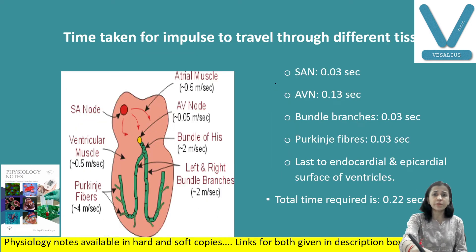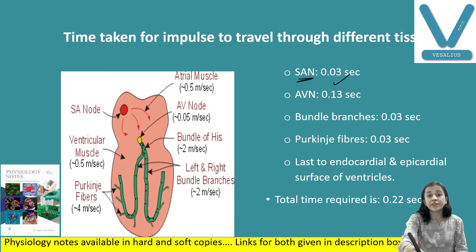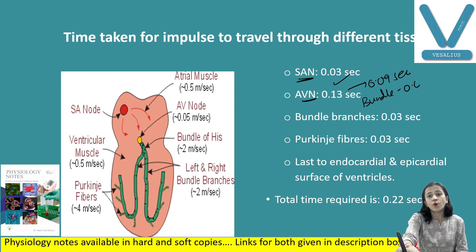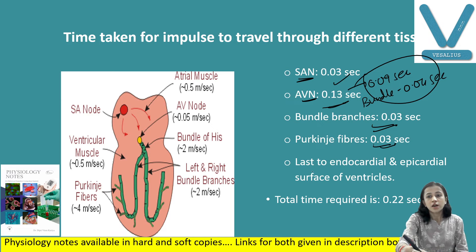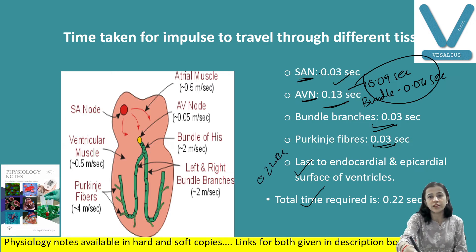Time taken for the impulse to travel through different tissues: SA node requires 0.03 second, AV nodal delay is 0.09 second, AV bundle requires 0.04 second — so total AV nodal delay is 0.13 second. Bundle branches require 0.03 second. Adding all including endocardial and epicardial surfaces of the ventricle, the total time required for the impulse to pass is 0.22 seconds.